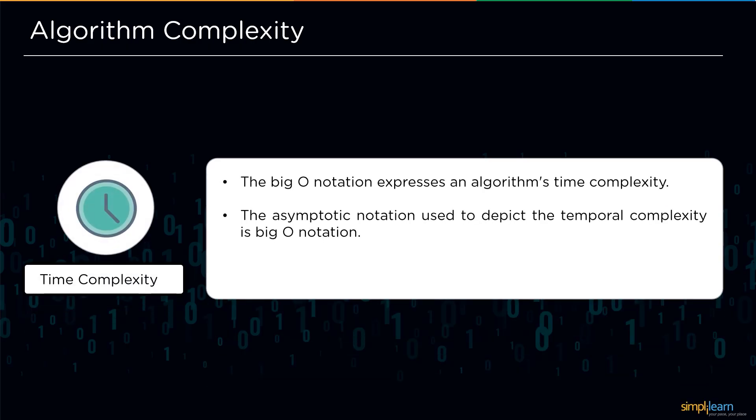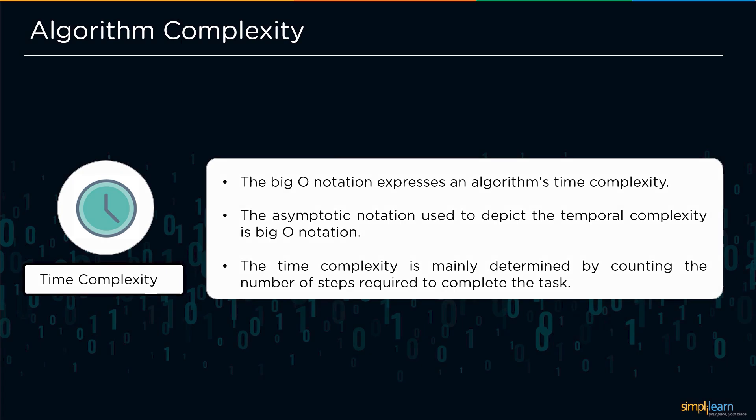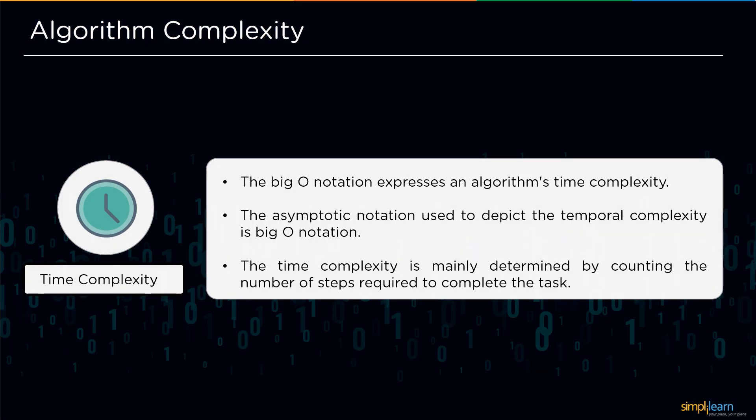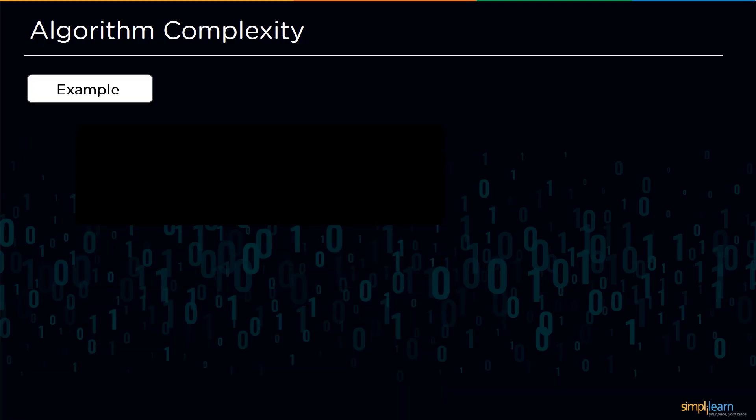We will begin with time complexity of an algorithm. The big O notation is used to express an algorithm's time complexity. The asymptotic notation is used to depict temporal complexity of big O notation. The time complexity is mainly determined by counting the number of steps required to complete the task. Let's take a look at an example to understand this time complexity in a much better way.